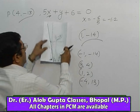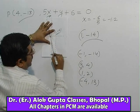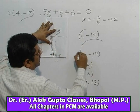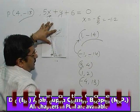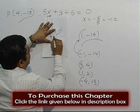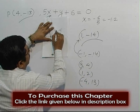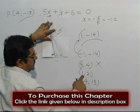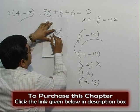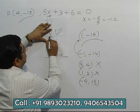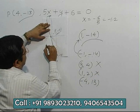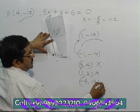Now, on the paper, yeh dekhiye, paper ki aap dekhiye, toh (-1, -14) is very near to this point. Yeh toh maine tentative rough plot kiya hai. (3, 4) - 1, 2, 3, 1, 2, 3, 4. Here, this is not the answer. (1, 2) - 1, 2. Here, this is not the answer. (-4, 13) - 1, 2, 3, 4. Minus 4, 13. This is not the answer.